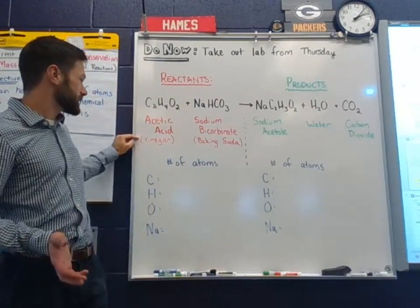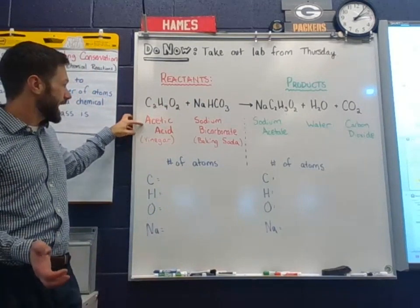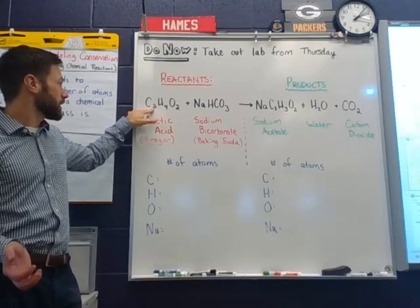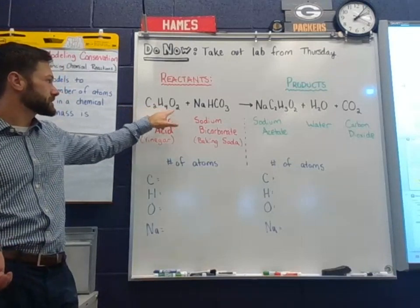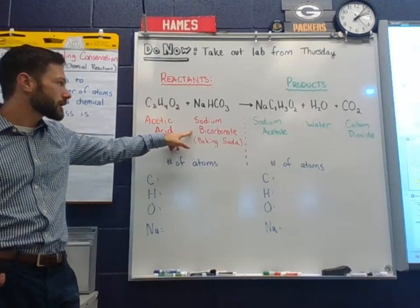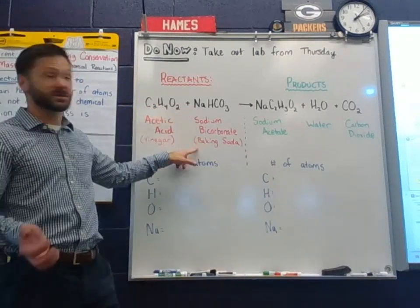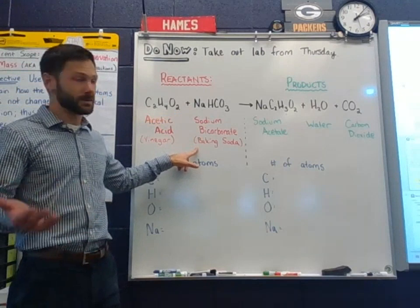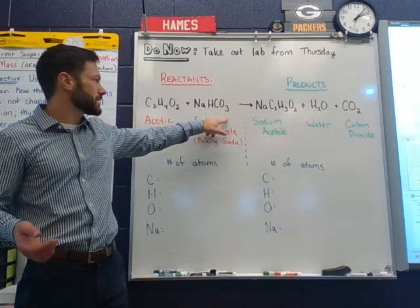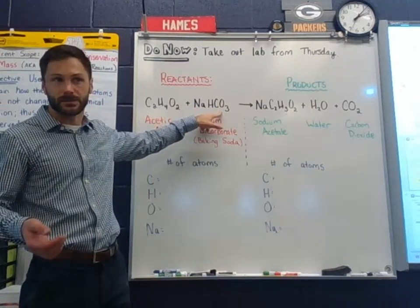So one substance you work with, acetic acid, which is vinegar, has two carbon atoms, four hydrogen atoms, and two oxygen atoms. You combine it with sodium bicarbonate, which is your baking soda, commonly known as sodium, hydrogen, carbon, there's all one of those, and then three oxygen atoms.